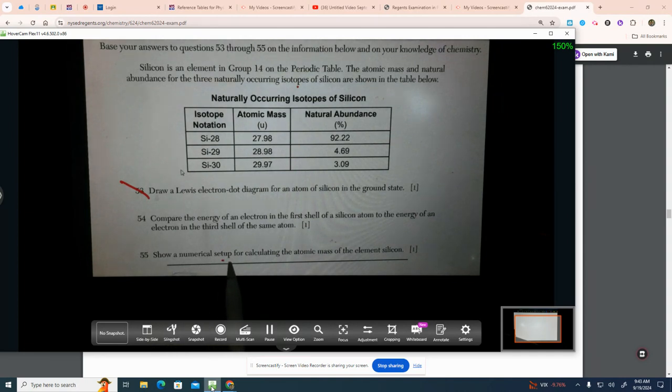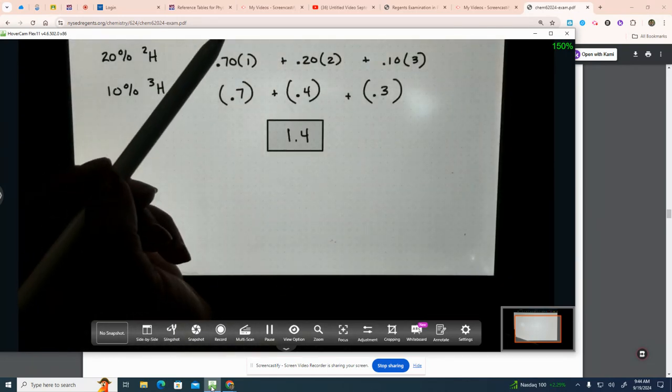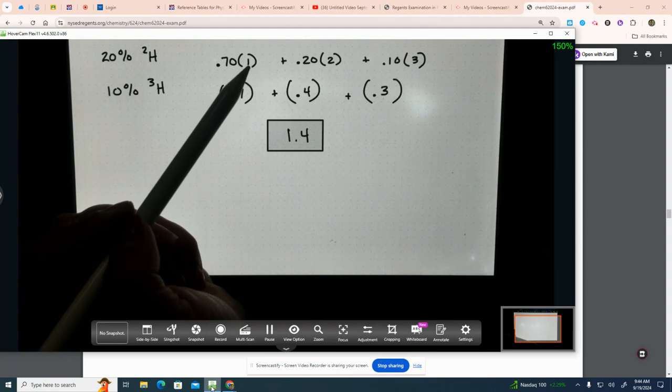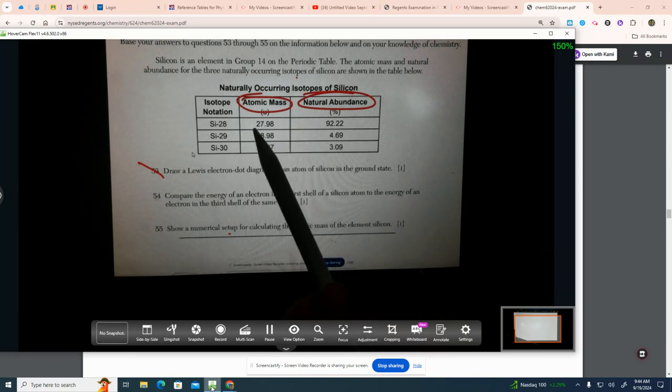55. Show a numerical setup for calculating the atomic mass of the element silicon. How do we calculate the atomic mass, average atomic mass of silicon, given the abundancies in percent and the masses? How did we do it here? We took the percent and we multiplied it by its mass. So, look here. Here's the percent, 92.22.